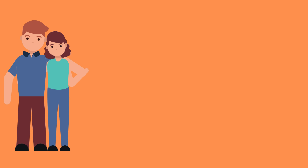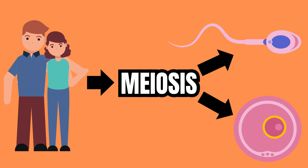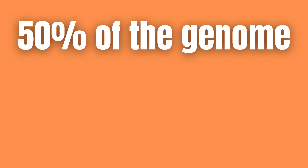Parent cells undergo meiosis to create gametes that contain 50 percent of the genome of the parent, meaning only one of the two alleles is given to the offspring by each parent.